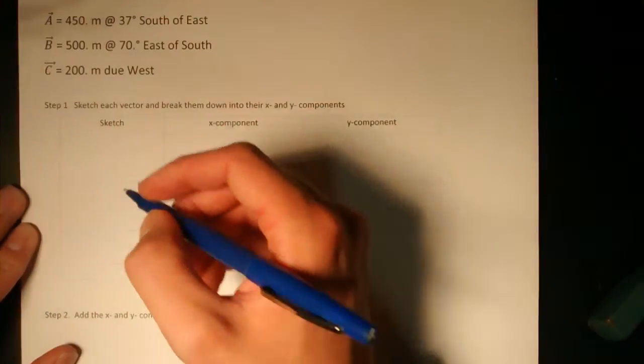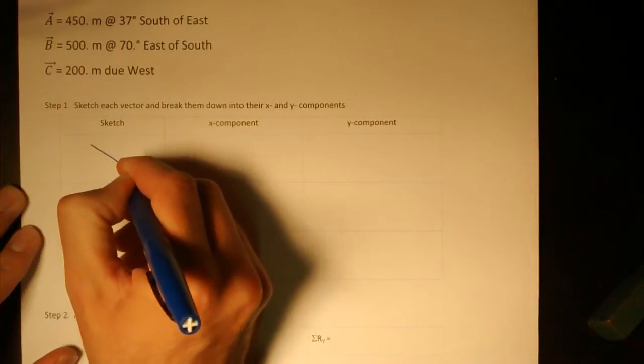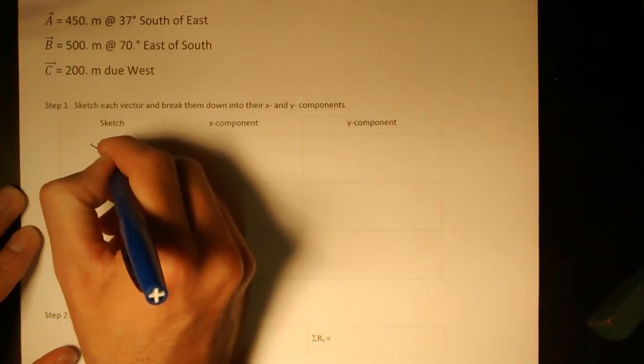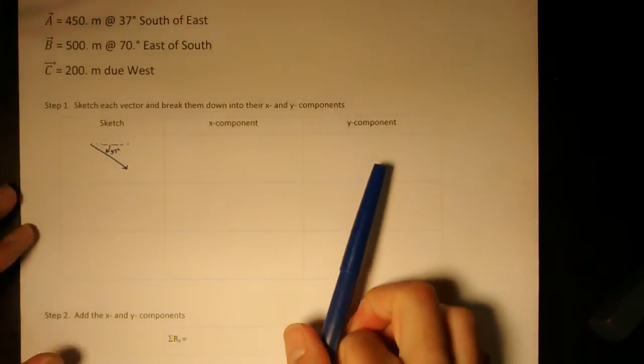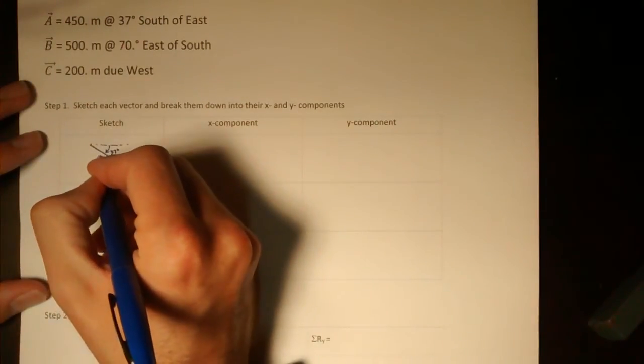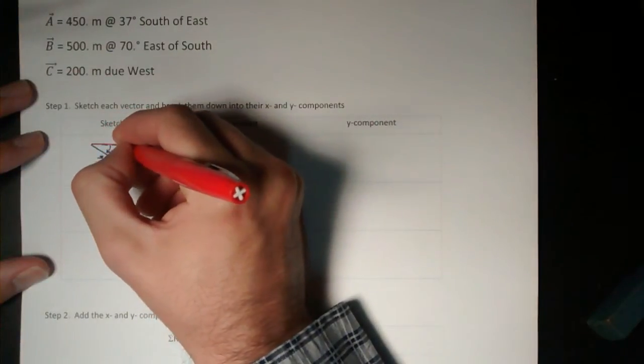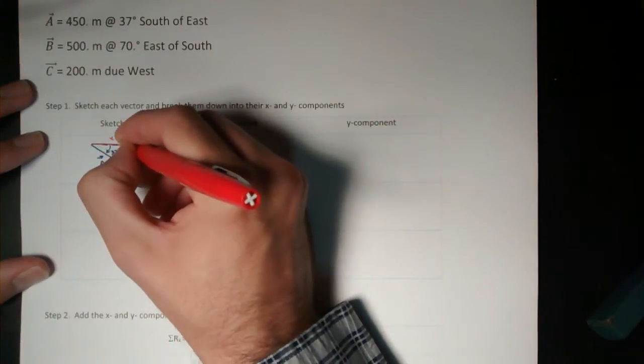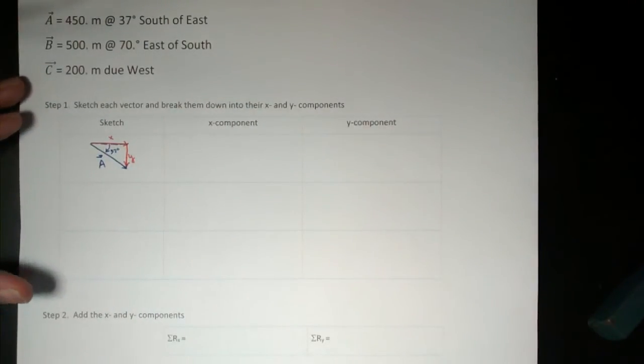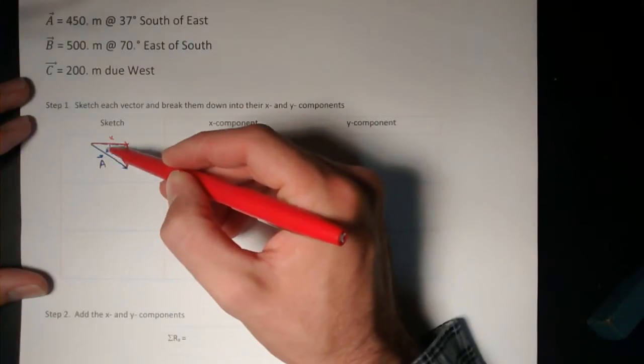we're going to sketch each vector and break them down to their x and y components. So vector a is 37 degrees south of east, so something like this. The 37 degrees is measured from the east. And so if I draw in the x and y components of vector a, that would be the x component, and that would be the y component. Notice I draw it so that my components and the actual vector itself enclose that angle.